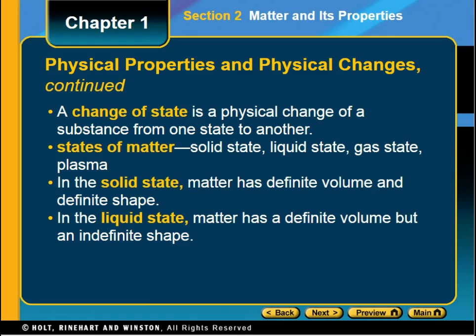Keep in mind, the solid state is matter that has definite volume and a definite shape — a square cube of sugar is still going to be a square cube of sugar no matter where you put it, unless you grind it and change its physical shape by exerting another force. A liquid has a definite volume but it will take the shape of the container. So when you pour water into a round beaker it'll be round, and when you pour water into a square beaker it'll be a square.